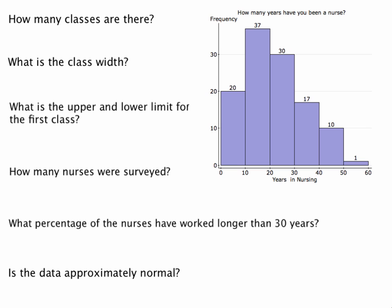For example, if we look at the first column, this first column is telling us that 20 nurses responded that they have been a nurse between 0 and up to, but not including, 10. So this is what's called our first class. The first thing we want to ask here is how many classes are there — how many columns are there?